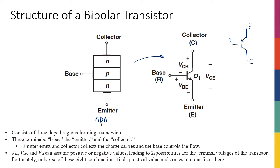The emitter is always on the side that has the arrowhead, the base is always in the middle, and the collector is the third terminal.